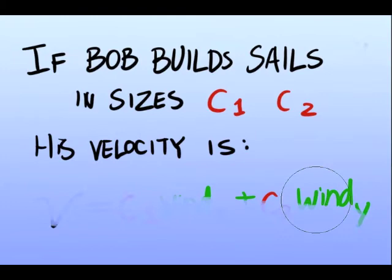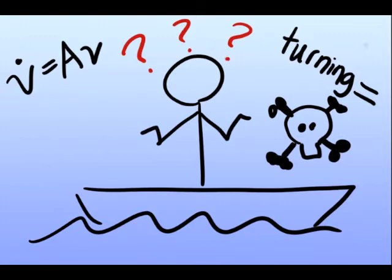More precisely, if Bob builds his sails in sizes C1 and C2, then his velocity will be a linear combination of the wind in each direction. With the knowledge that V dot equals AV and the knowledge that turning is death, how big should Bob make each sail?